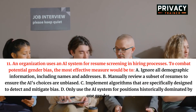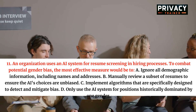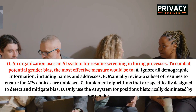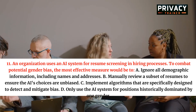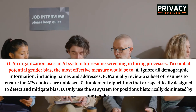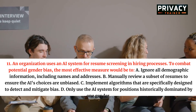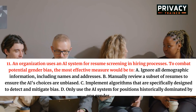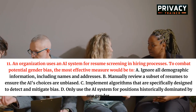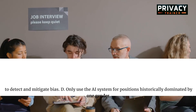Question 11. An organization uses an AI system for resume screening in hiring processes. To combat potential gender bias, the most effective measure would be to: A. Ignore all demographic information, including names and addresses. B. Manually review a subset of resumes to ensure the AI's choices are unbiased. C. Implement algorithms that are specifically designed to detect and mitigate bias. D. Only use the AI system for positions historically dominated by one gender.